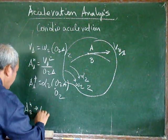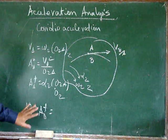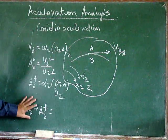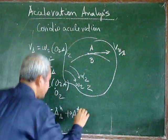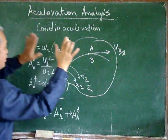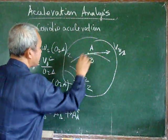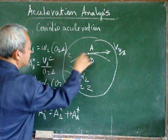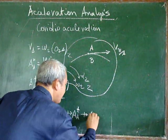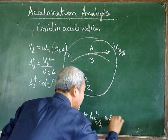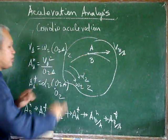The total acceleration of B includes the normal and tangential components of B's acceleration, though sometimes we cannot distinguish them and will just know the total acceleration of point B. This equals the normal and tangential components of acceleration of A — meaning we allow the motion of the body while holding B stationary — plus the normal and tangential components of acceleration of B with respect to A, meaning we hold body 2 stationary and allow point B to move along that path.